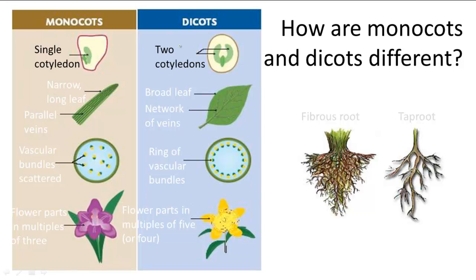Cotyledons can be a source of food for the seed, although in monocots, the food reserves remain mostly within the endosperm — this part of the seed — whereas in dicots, the endosperm is absorbed into the two cotyledons, so a mature dicot seed has no endosperm at all.